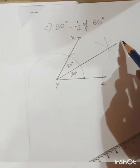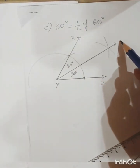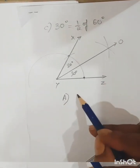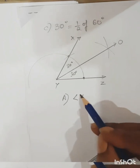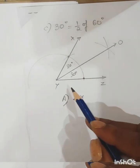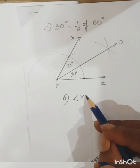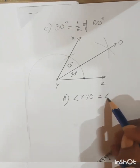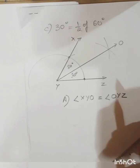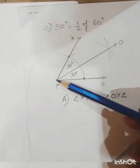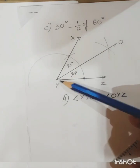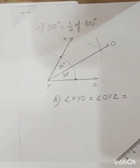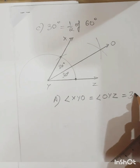Name the bisector point O. Then angle XYO equals angle OYZ, and each is equal to 30 degrees.